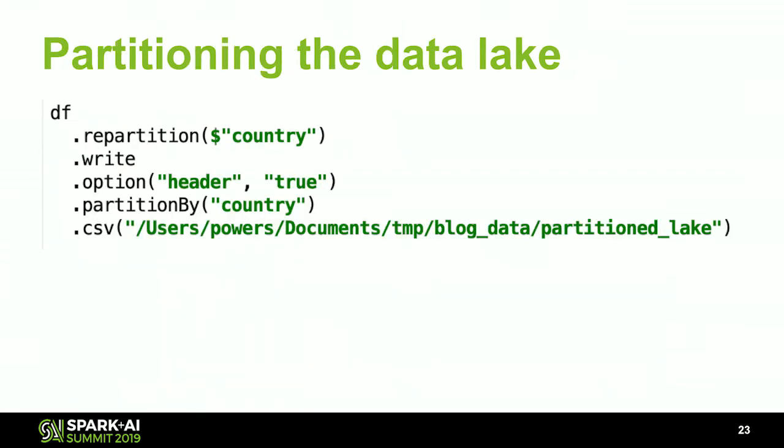Now let's partition this data lake. Creating a partition data lake is actually surprisingly complicated. What we're going to do is repartition based on the country column — df.repartition(country) — that's going to repartition the data in memory. Then we write it out using partitionBy(country), which specifies how to partition it on disk. This is a very important distinction: there are two different types of partitioning in Spark — partitioning in memory and partitioning on disk. So we're partitioning in memory first, and then partitionBy specifies how it's going to be partitioned on disk.